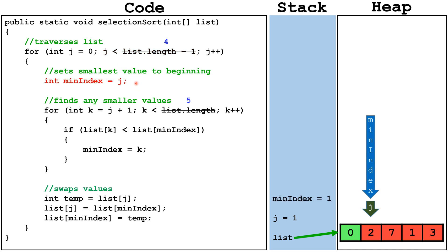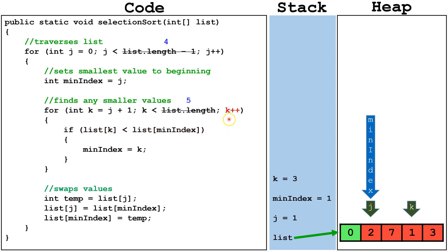We set min index equal to j. Then we use our internal loop to see if we can find any smaller numbers. We set k equal to j plus 1. We check is k less than 5 — it is, so we continue the internal loop. We check is list index k less than list min index. It is not, so we skip this line of code and finish off our cycle of the internal for loop. We increment k by 1 to 3. We check is k less than 5 — it is, so we continue. We check is list index k less than list min index. It is, so we're going to set min index equal to k.